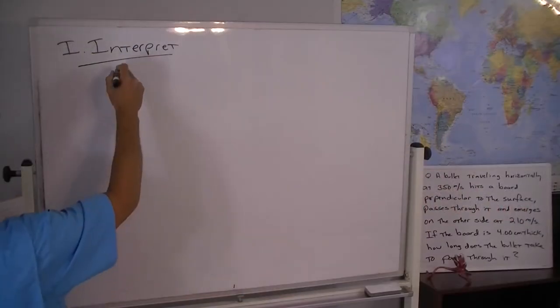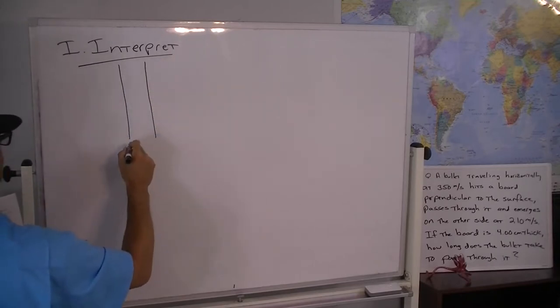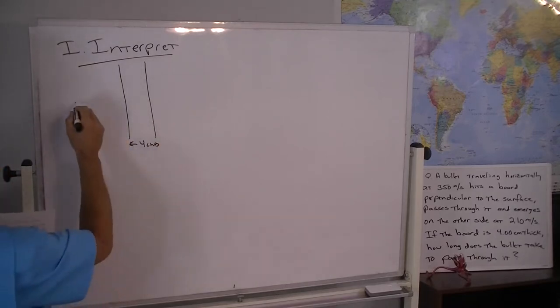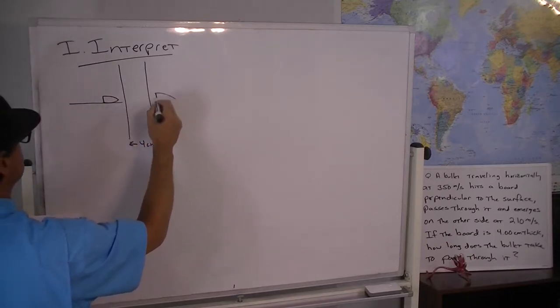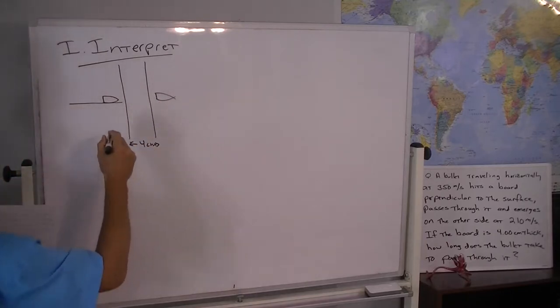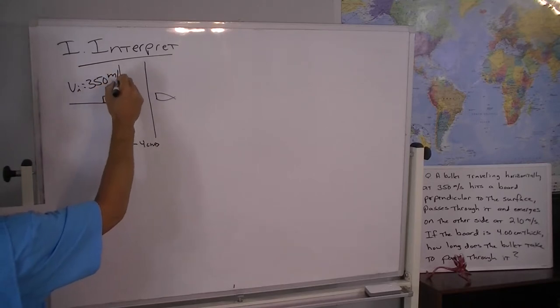Okay to interpret the problem we want to draw a good picture and so this represents our board with the four centimeters thickness. We've got the incoming bullet. The bullet goes through it and so the initial velocity for the incoming bullet is 350 meters per second.